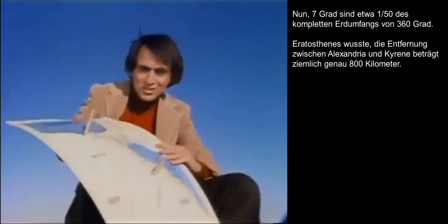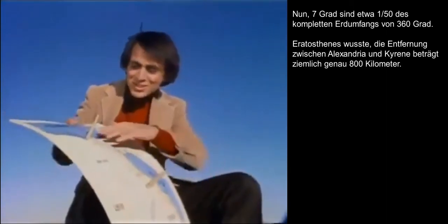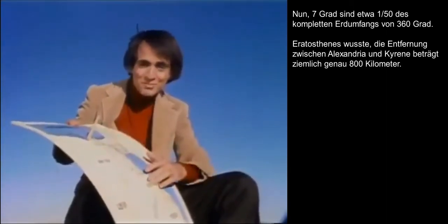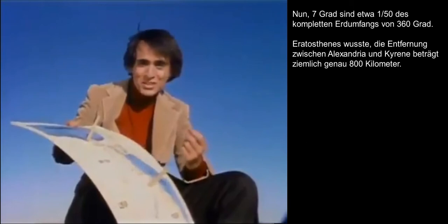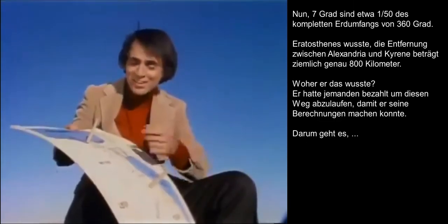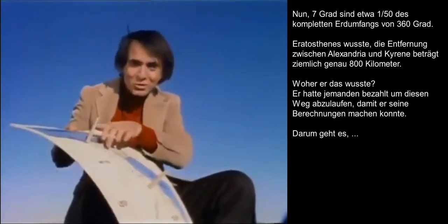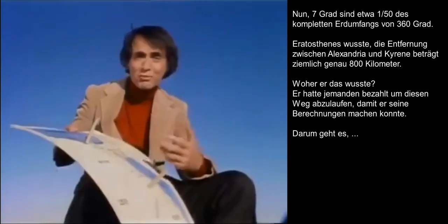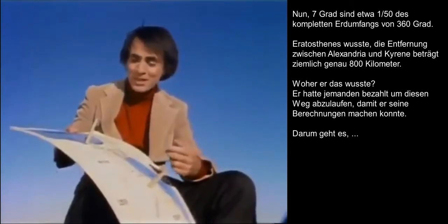Eratosthenes knew the distance between Alexandria and Syene — he knew it was 800 kilometers. Why? Because he hired a man to pace out the entire distance so that he could perform this calculation.